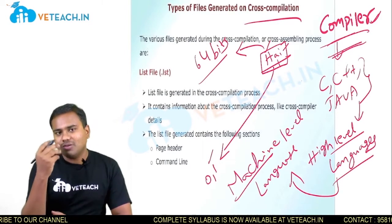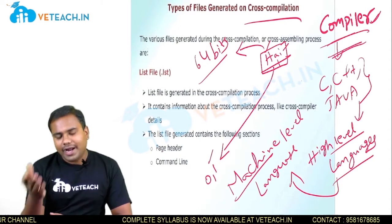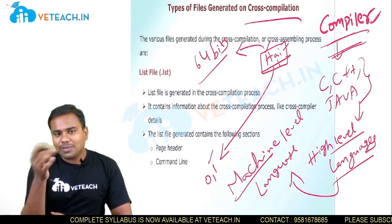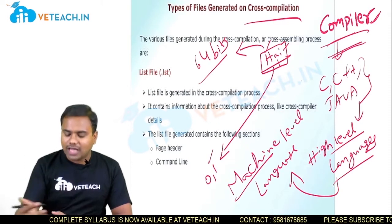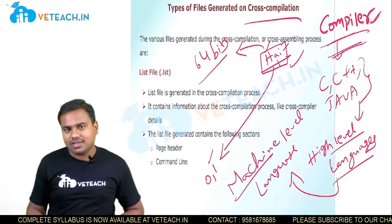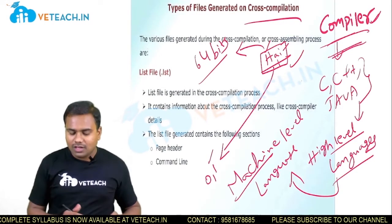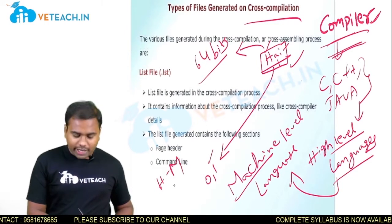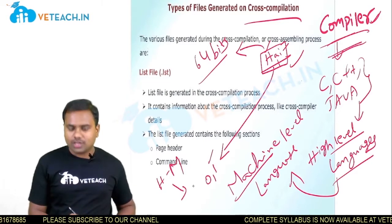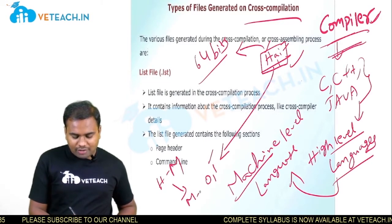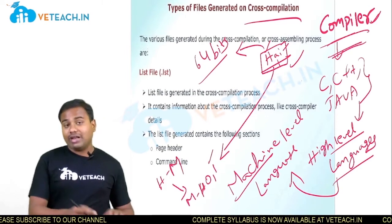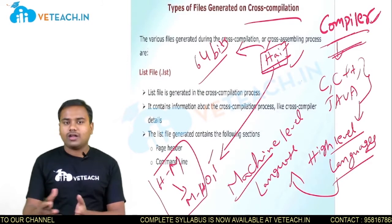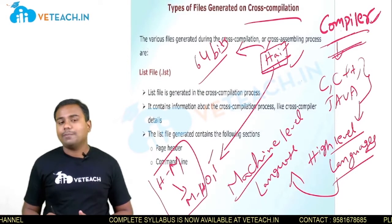And this machine level language will be forwarded to my friend or the other person. Then the mobile phone what he is having receives the machine level language and it displays again the high level language — that is the 'Hi' message. This is what happens: high level language to machine level language conversion, and then machine level language back to high level language. This is the process that happens in our mobile phones when we send messages. So that is nothing but the compiler.